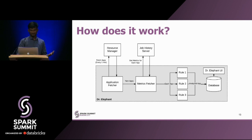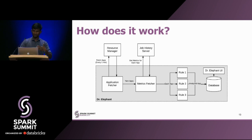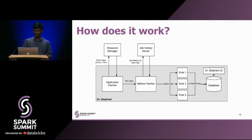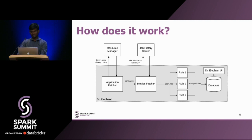Dr. Elephant gives you suggestions on how you can fix those rules — for example, if there is skewness in the input of your data, it tells you what you can do to prevent that skewness. Behind the scenes, there is an application fetcher that periodically fetches the fresh set of yarn applications from the resource manager. A metrics fetcher module collects all the metrics and data for those individual applications from the job history server. Rules run on those metrics, classify applications as critical, and the analyzed results are stored in a database for users to view in the UI.